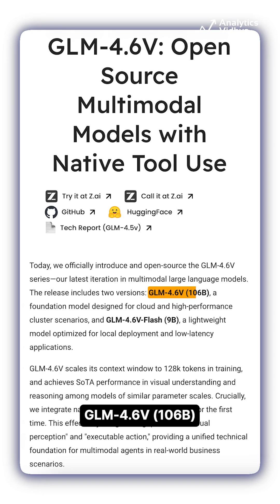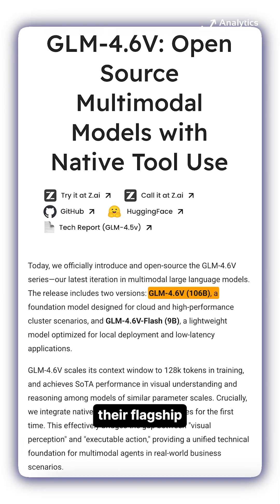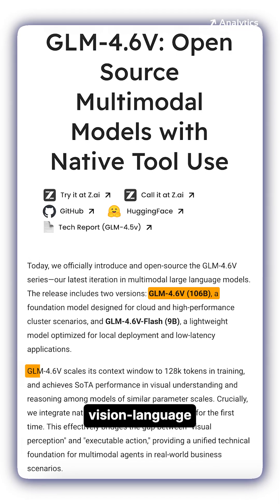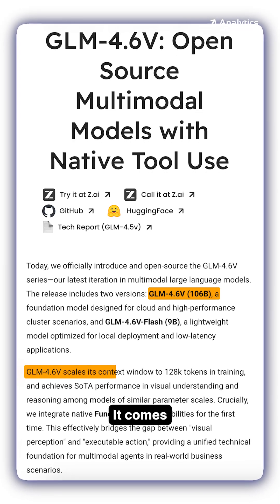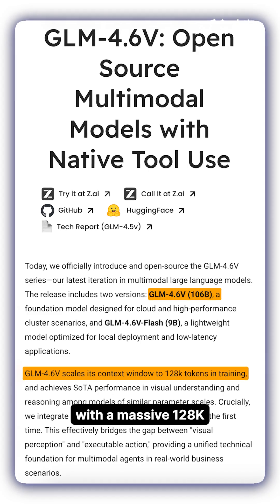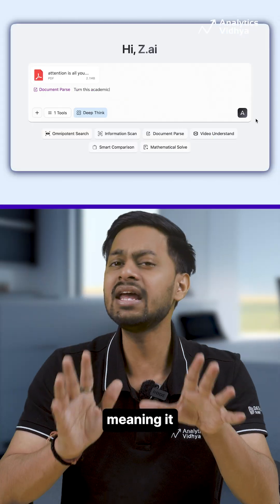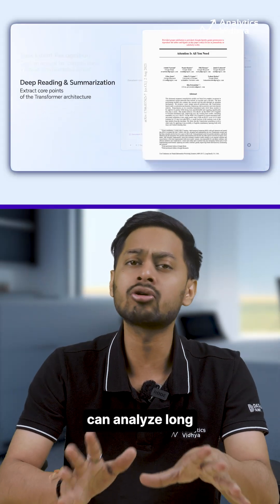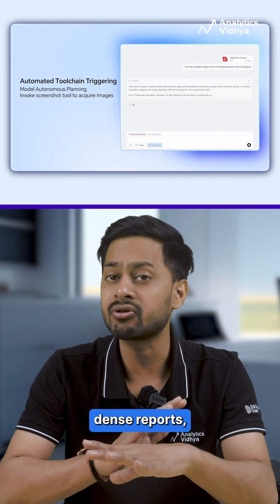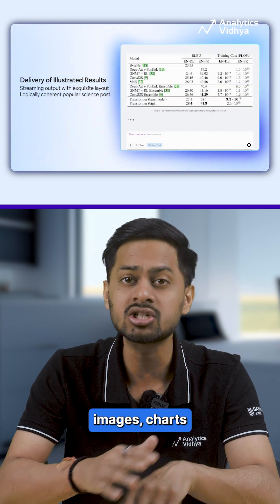First, meet GLM 4.6V 106B, their flagship vision language model. It comes with a massive 128K context window, meaning it can analyze long documents, dense reports, multiple images, and charts all in one go.